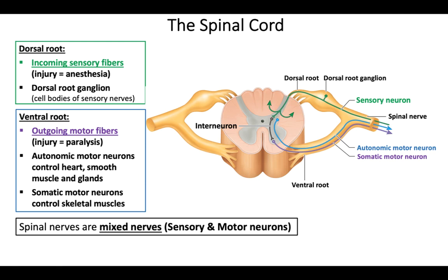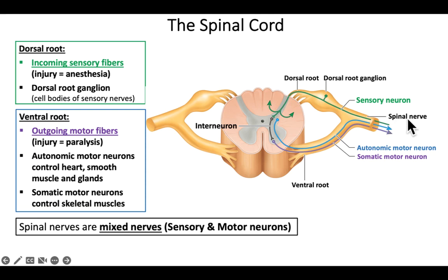Paralysis is when you can't get a motor signal to the effector, whereas anesthesia is when you block the sensory or incoming signals. Autonomic motor neurons control things like your heart, smooth muscle organs, and glands, whereas the somatic motor neuron leads to a skeletal muscle. They're all packaged together in the spinal nerve. So the spinal nerve is mixed sensory and motor — the roots are not. Dorsal is sensory, ventral is motor.